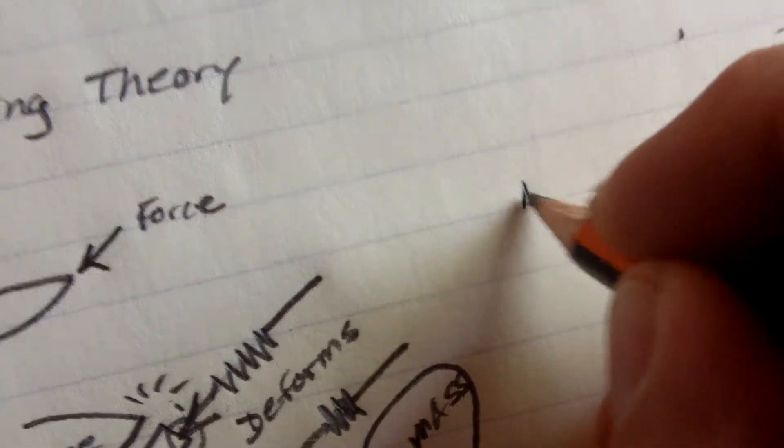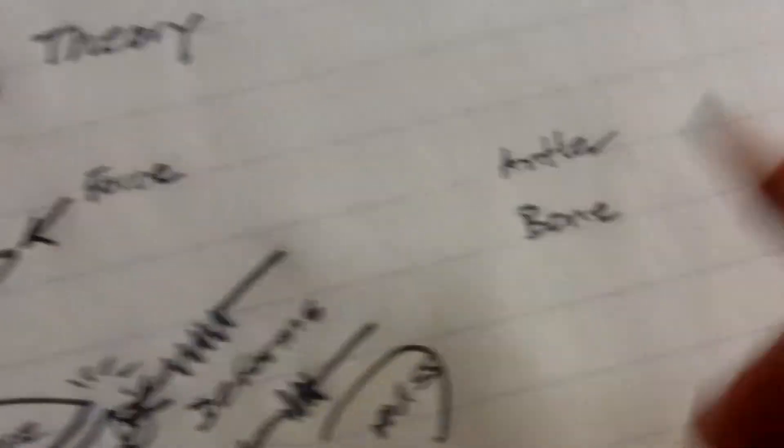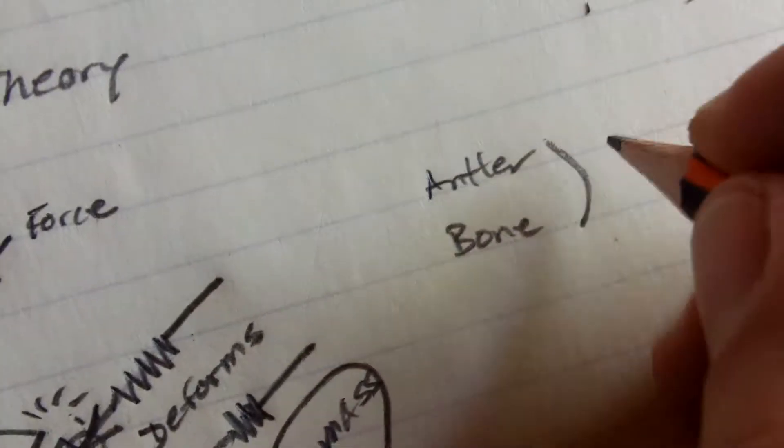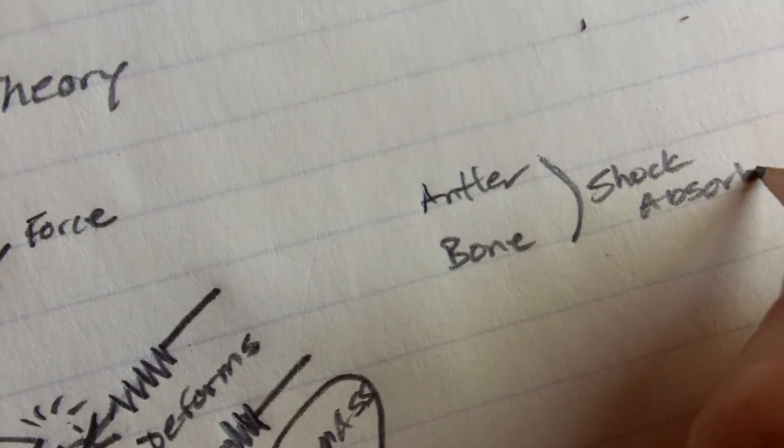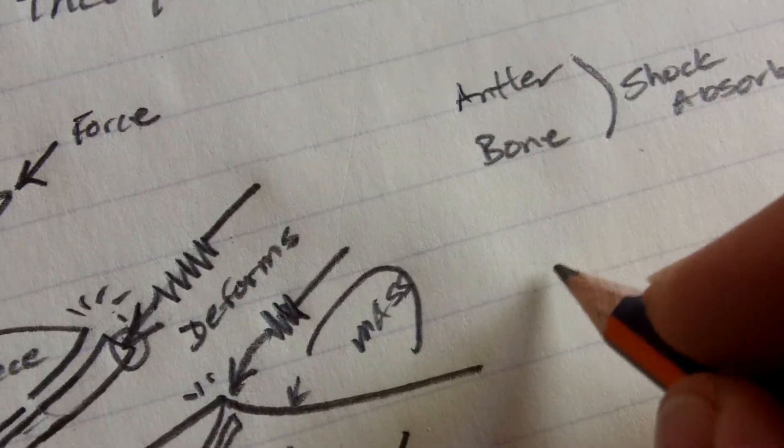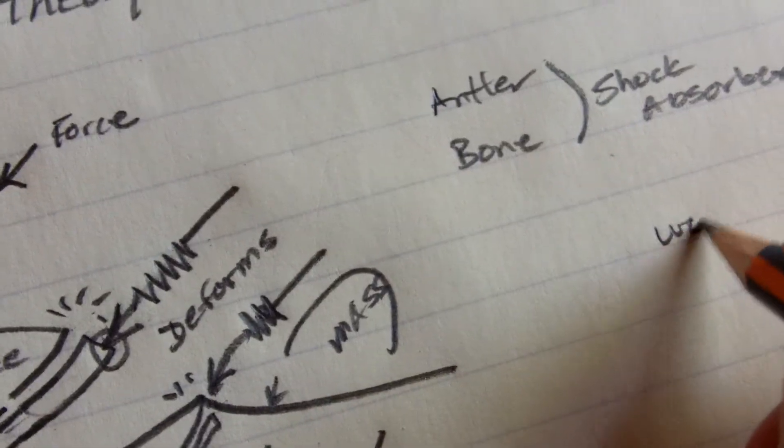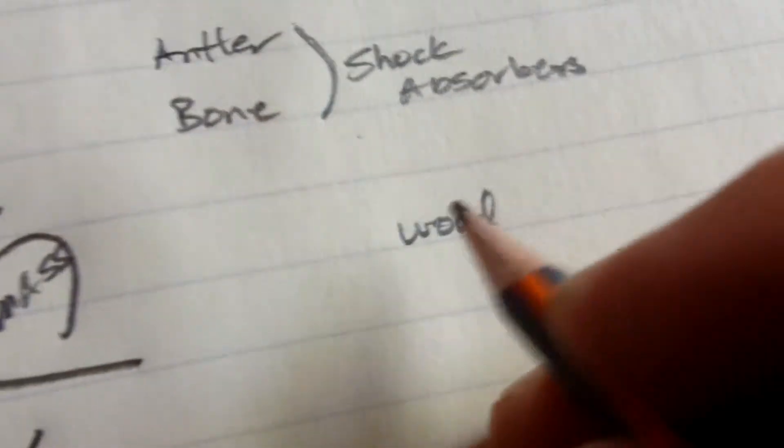Now natural materials like antler and bone, they are natural shock absorbers. Okay, and wood is also. So that's why these are good for flint knapping.